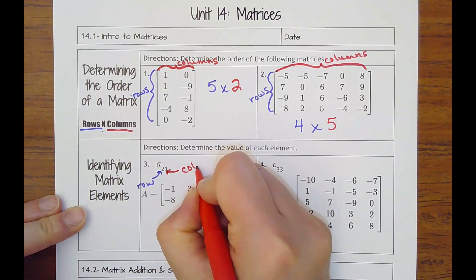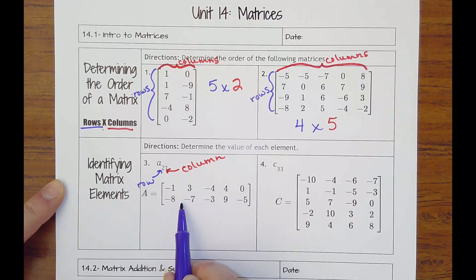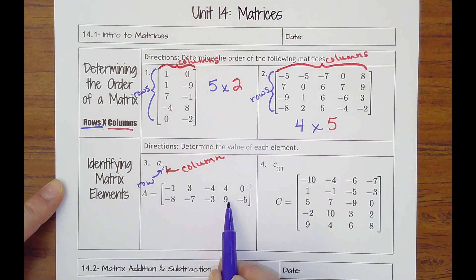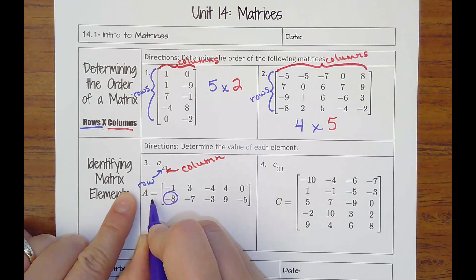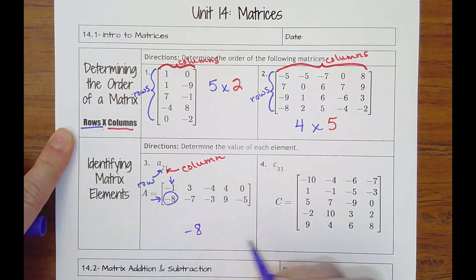So I'm looking in row two, which would be this one, and I want the first column, which would be this. So I want row two, column one. That would put me at negative eight.